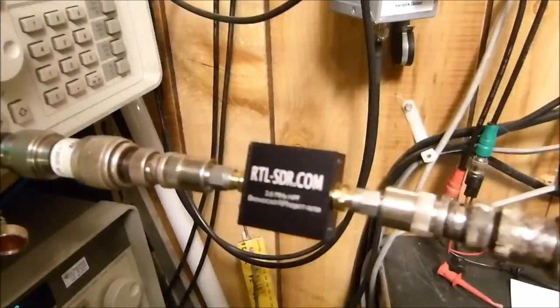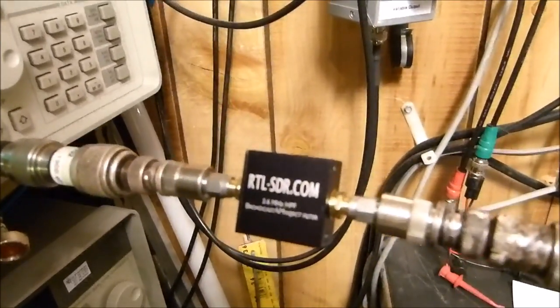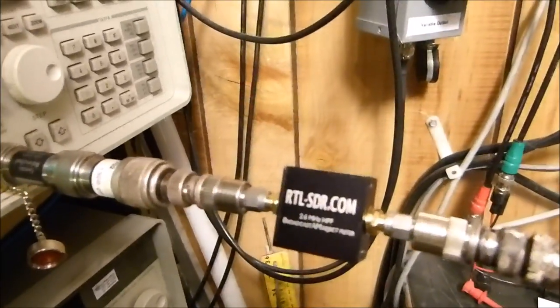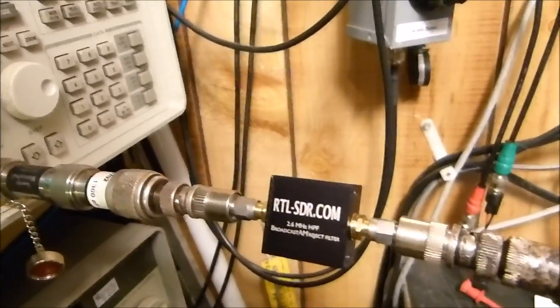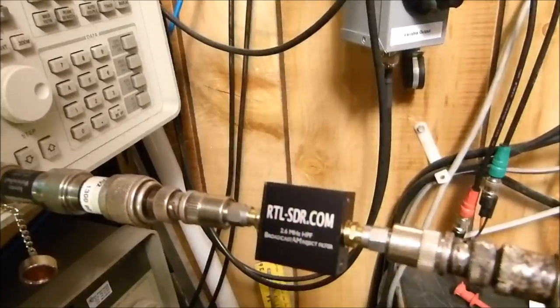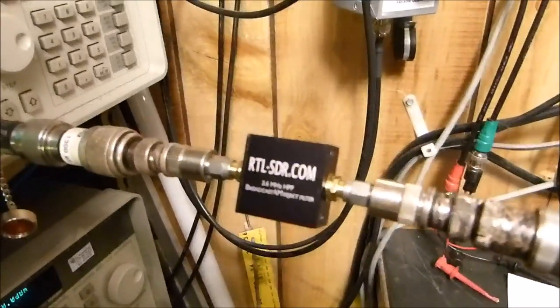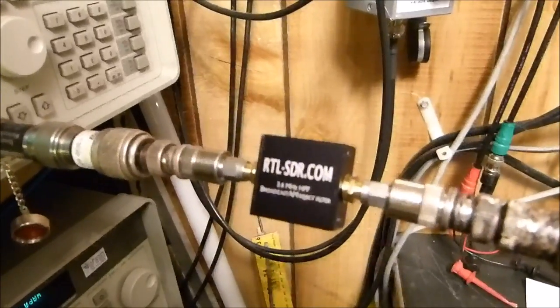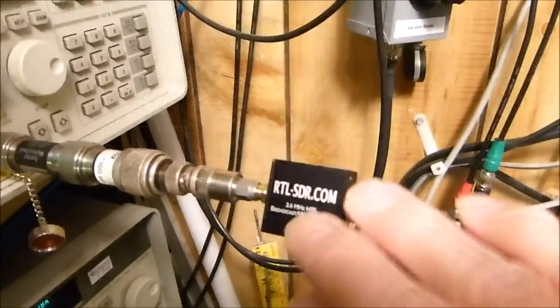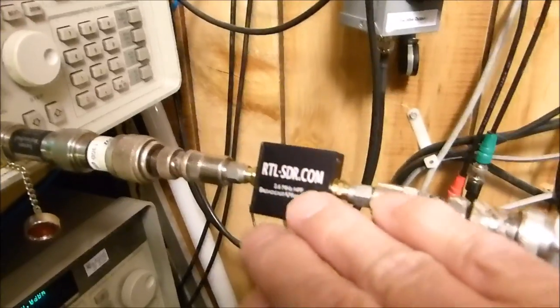It's going to block the AM broadcast band, which is basically from about 550 kilohertz up to about 1.6, a little bit more than 1.6 megahertz. It's going to do a beautiful job of blocking that, but in essence, it's going to attenuate everything below 2.6 megahertz.